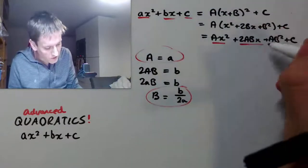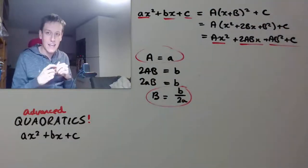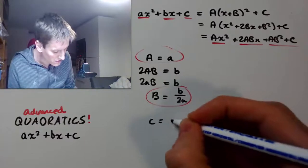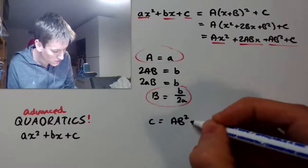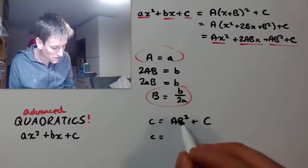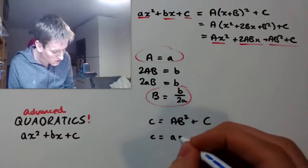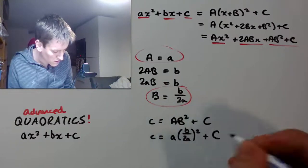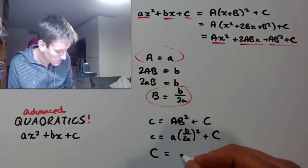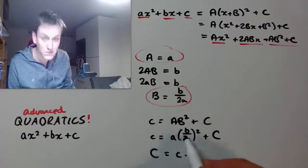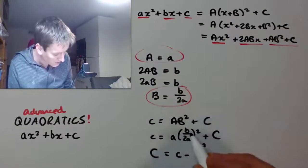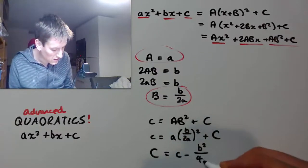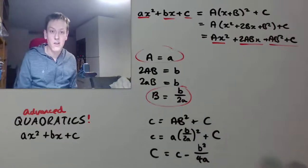And then finally I could look at c and equate that to ab squared plus c in capitals. So I've got that c has to be equal to capital A capital B squared plus capital C. But I know these two, so this is a and this is b over 2a all squared. Right, so my capital C is going to be c minus this fraction here. And let's multiply it out, so b squared over 4a squared. But then that cancels with 1a here. So I get b squared over 4a.